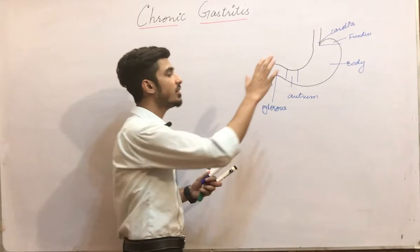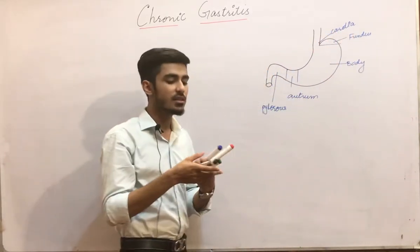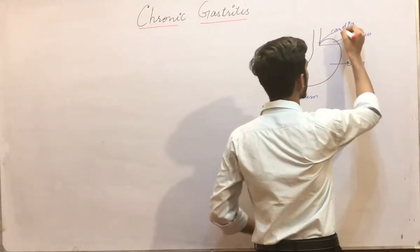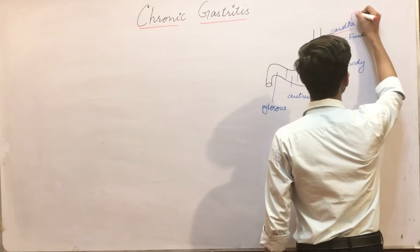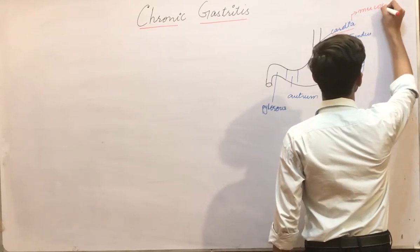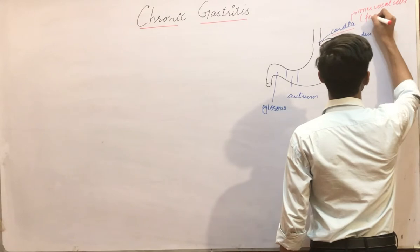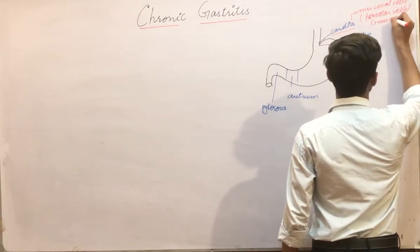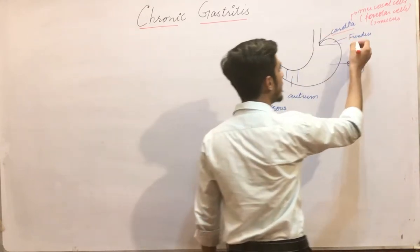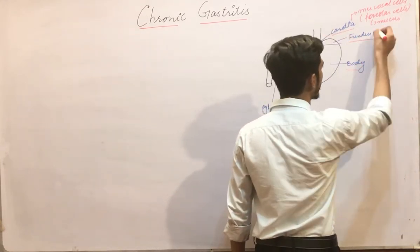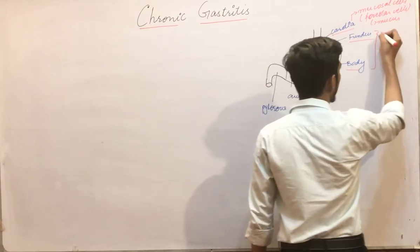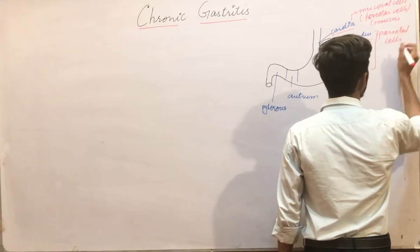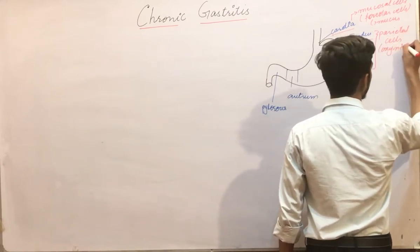The different parts contain different types of cells, which will make it easy to understand chronic gastritis. First is the cardia — it contains mucosal cells, also called foveolar cells, and they secrete mucus, forming the mucus lining. Then we have the fundus and body, which contain two types of cells. Number one are the parietal cells, also called oxyntic cells.